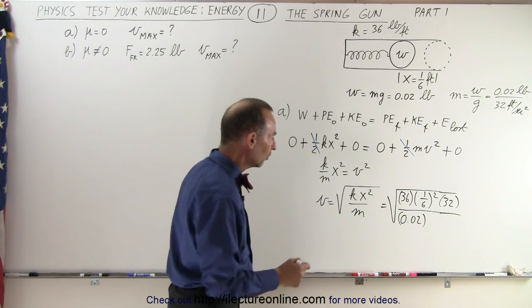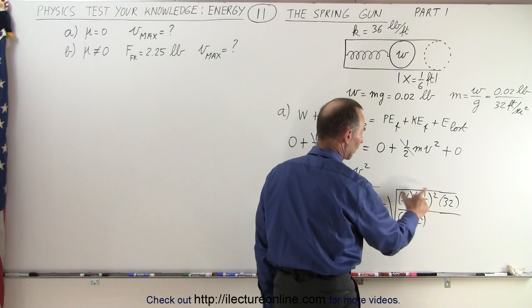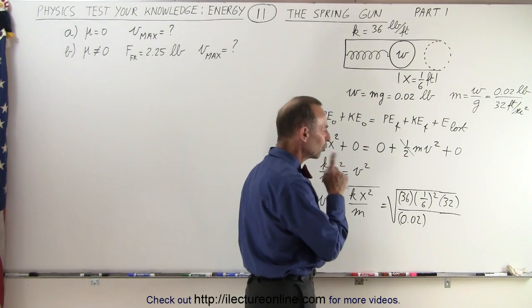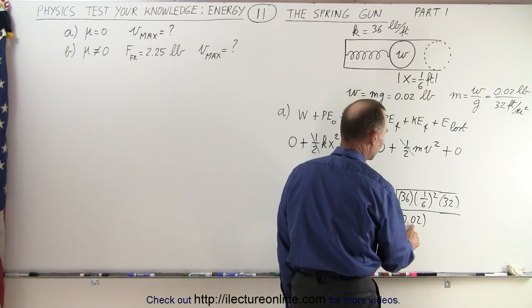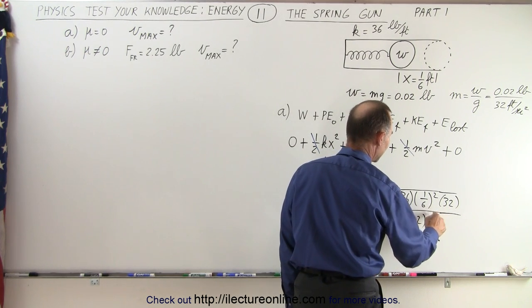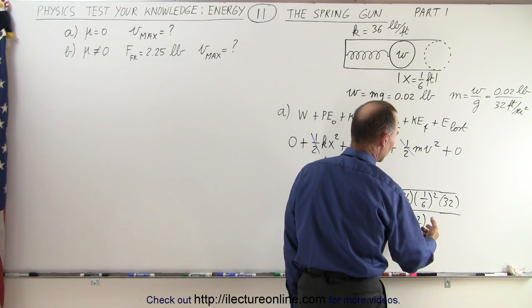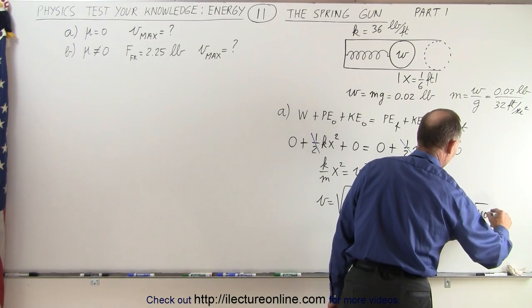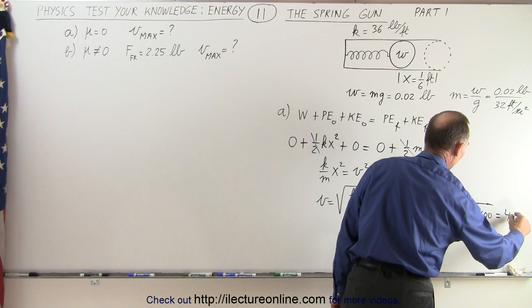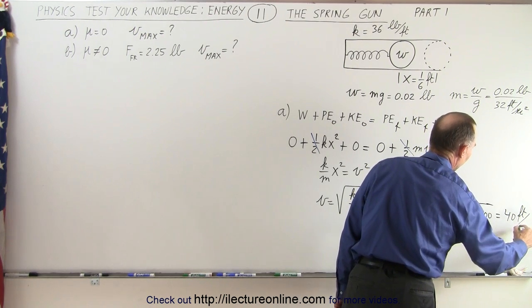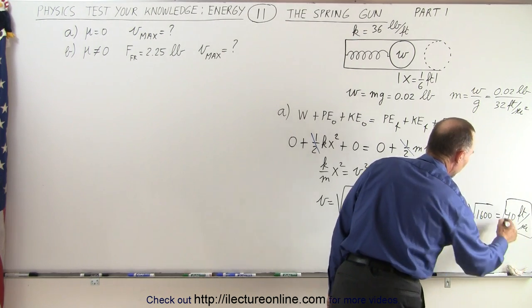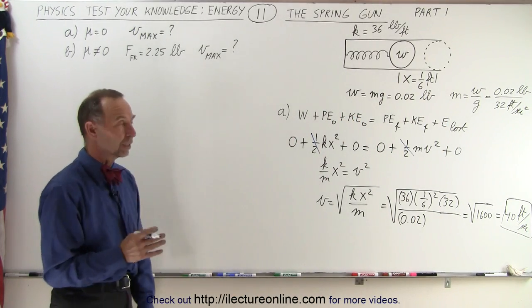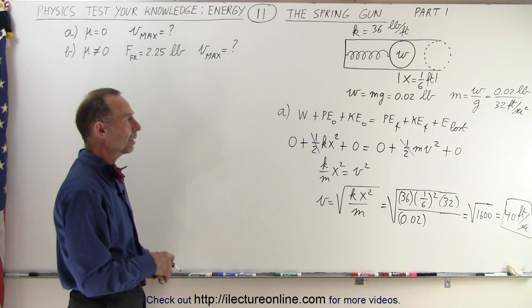All right. So notice that 36 times 1/6 squared, that is equal to 1. 32 divided by 0.02, 32 divided by 2 would be 16 times 100, that would be 1600, the square root of 1600, and of course that would be equal to 40, and units would be 40 feet per second. So that would be the velocity of the bullet as it leaves the barrel of the spring gun when there's no friction in the barrel.